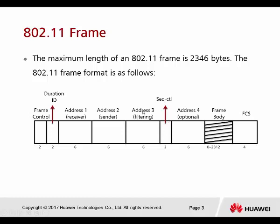Between address three and address four, they have sequence control, which is 2 bytes. Then there is the frame body, which refers to our data — it depends on what kind of data frame we're forwarding. Every single 802.11 frame supports up to 2312 bytes. The last field is 4 bytes used for the FCS.